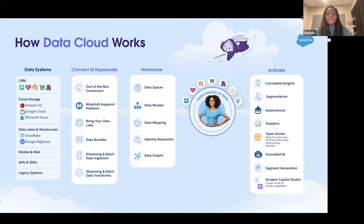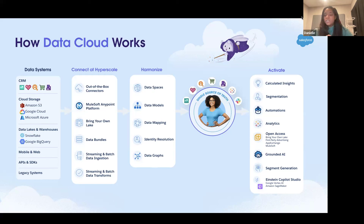Of course, you don't just want to pull all this data into Data Cloud — you want to do something with it. We have the ability to perform activations on the data in the form of calculated insights, which are aggregations and transformations using data transforms and batch transforms. You also have the ability to segment data into audiences so that you can use them in Google Ads, Meta Ads, and Amazon Ads for marketing targeting purposes.